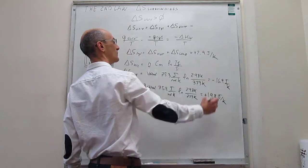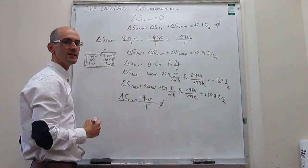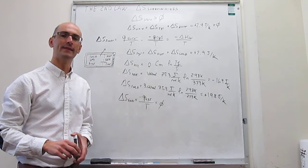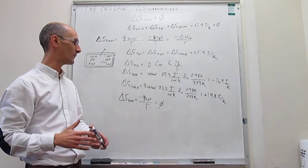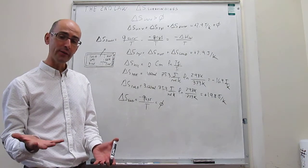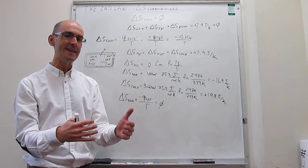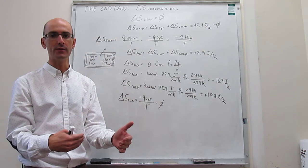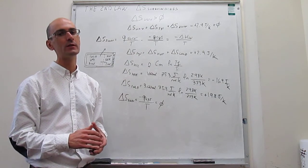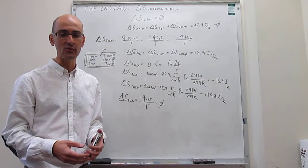We can now calculate the change in entropy of the universe: ΔS_universe = +2.9 J/K + 0 = +2.9 J/K. The most important result is that this number is positive, which tells us the process is spontaneous. Obviously we know mixing hot and cold water produces lukewarm water, but the reverse — lukewarm water spontaneously separating into hot and cold — never occurs. The second law confirms that the reverse process would give a negative ΔS_universe and is therefore not spontaneous.